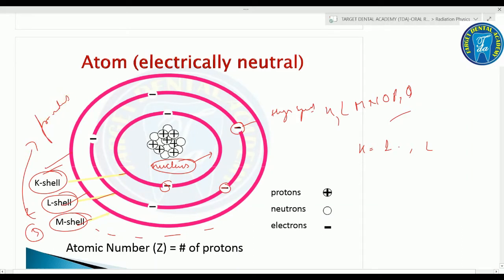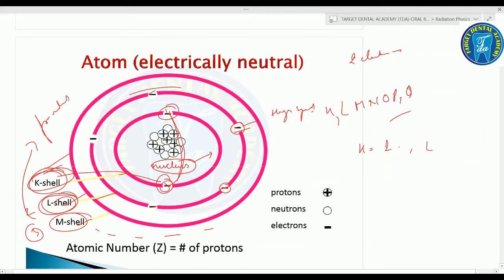Only two electrons may occupy the K shell. In the L shell, there are up to eight electrons, and the number keeps increasing in outer shells.